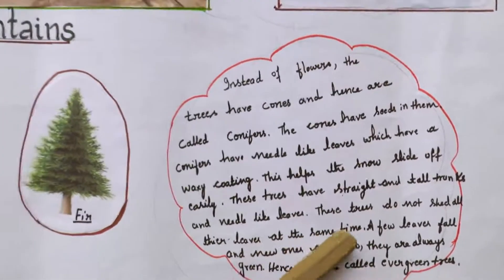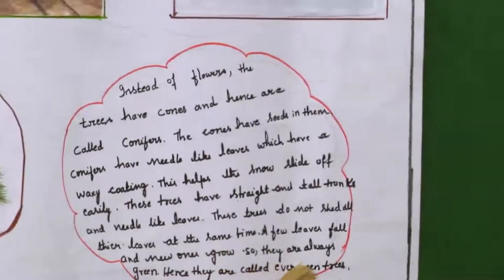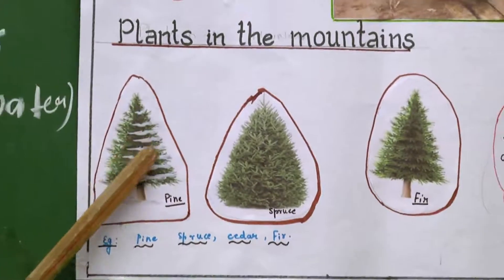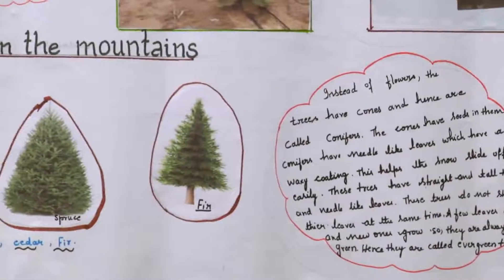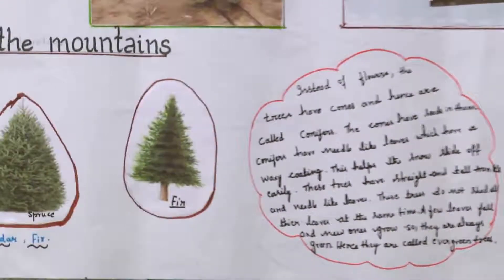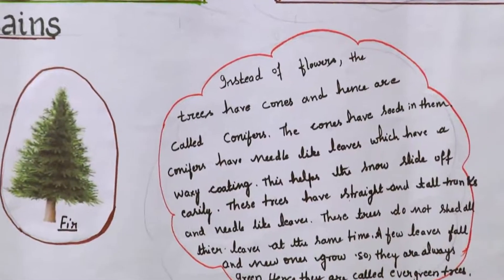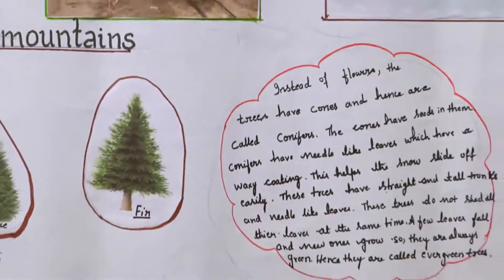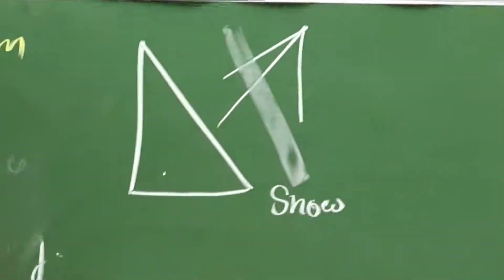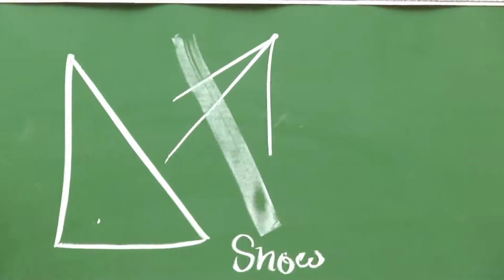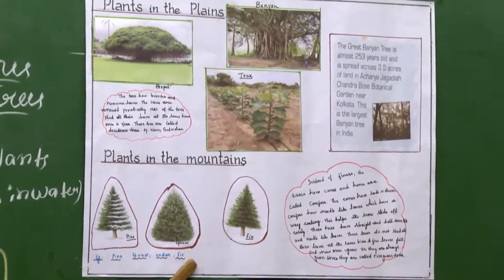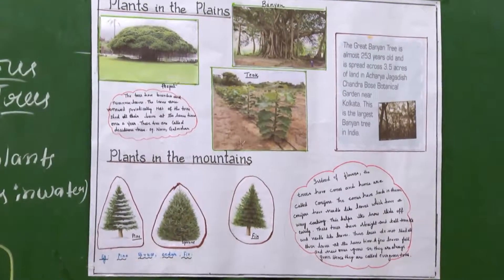These plants do not shed their leaves all at the same time — a few leaves fall and new ones grow, so they are always green. Hence they are called evergreen. They have tall trunks and needle-like leaves always in a full conical shape for easy sliding of the snow. These plants — pine, spruce, cedar, and fir — found in the Himalayas are called coniferous plants.